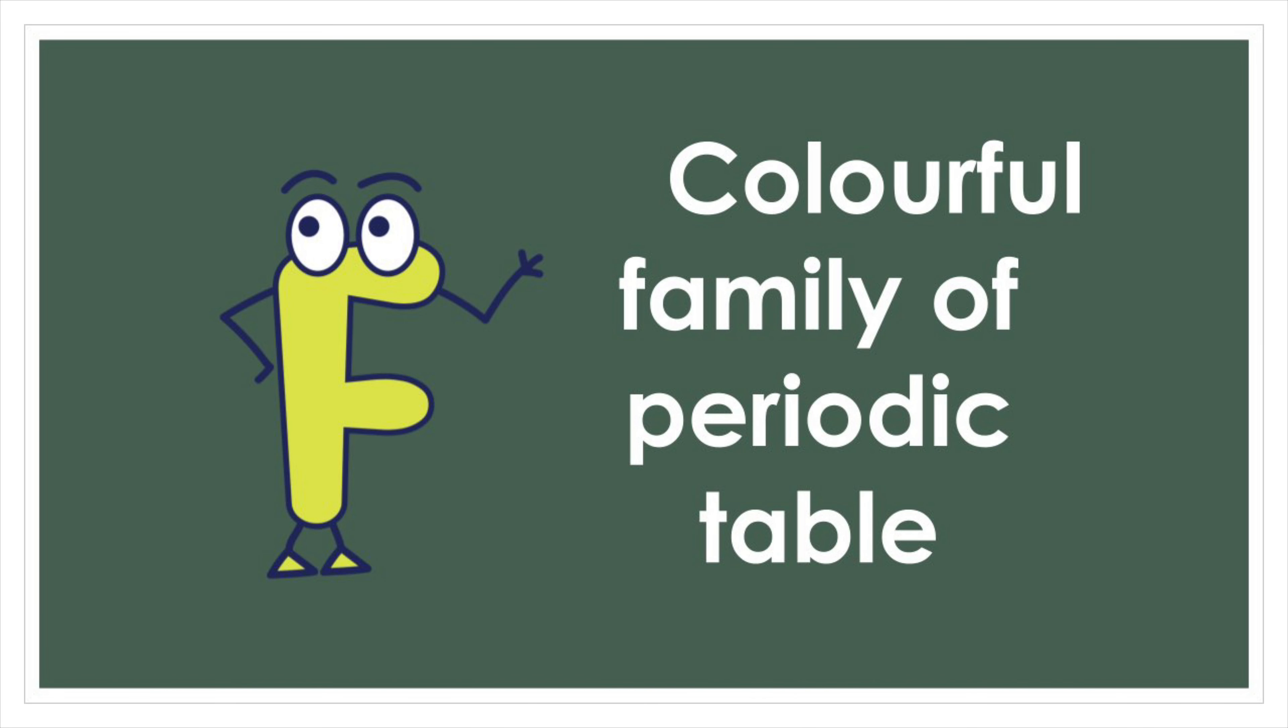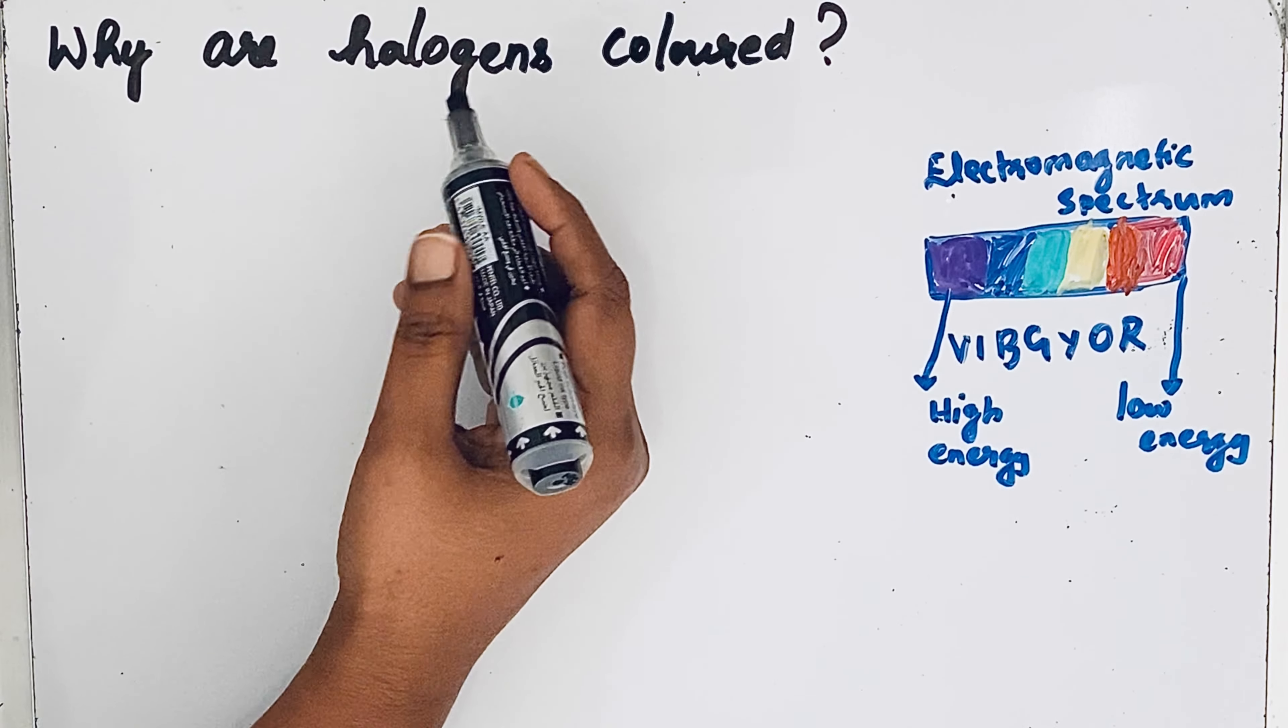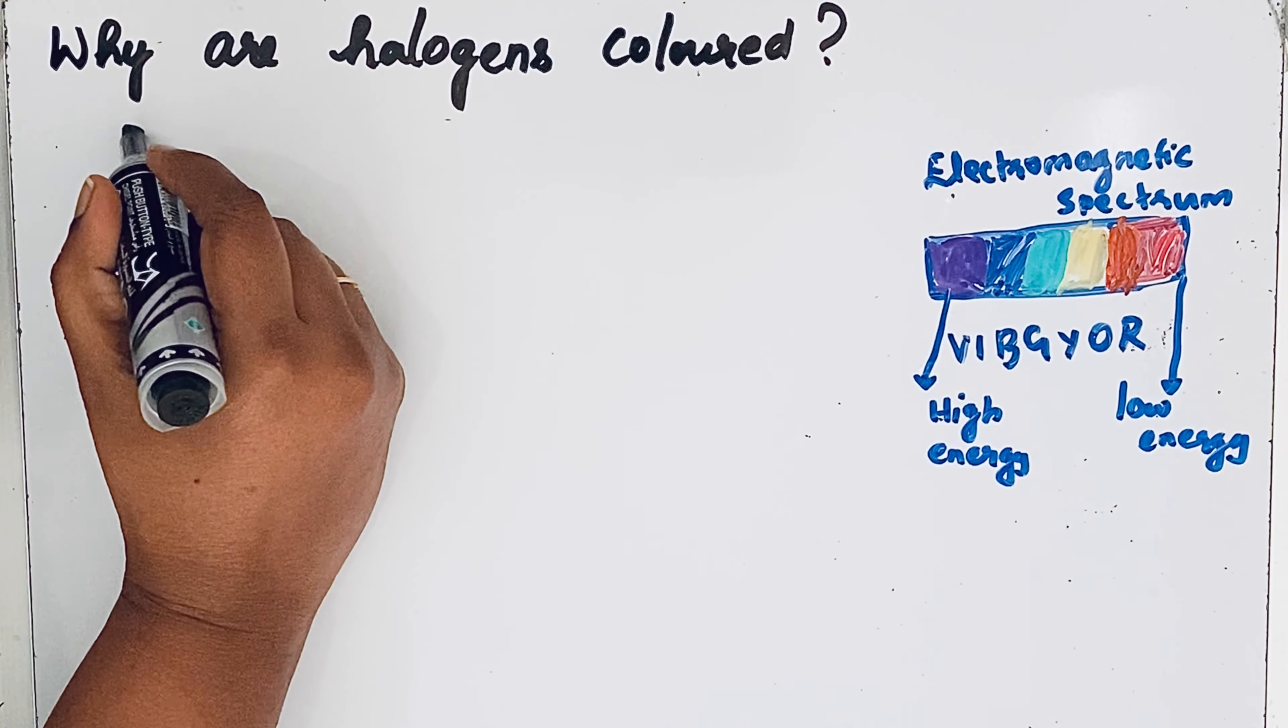Welcome to Aurora Chemistry. In the periodic table, halogens are colored elements present in the 17th group. We are here to discuss why halogens are colored. In the halogen family, fluorine is the first element.